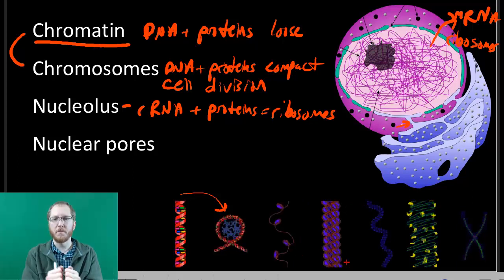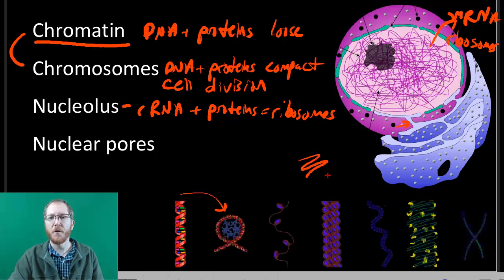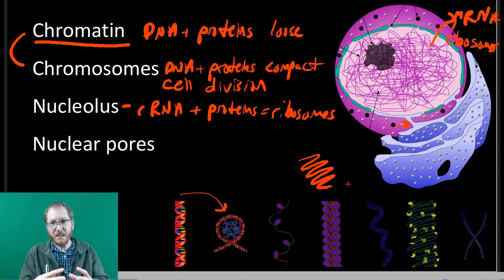So we then get this fiber that's composed of this condensed protein and DNA that's wrapped around the proteins. And then these fibers will actually start to go back and forth. You know, they kind of form these loops. And so that will condense things further.